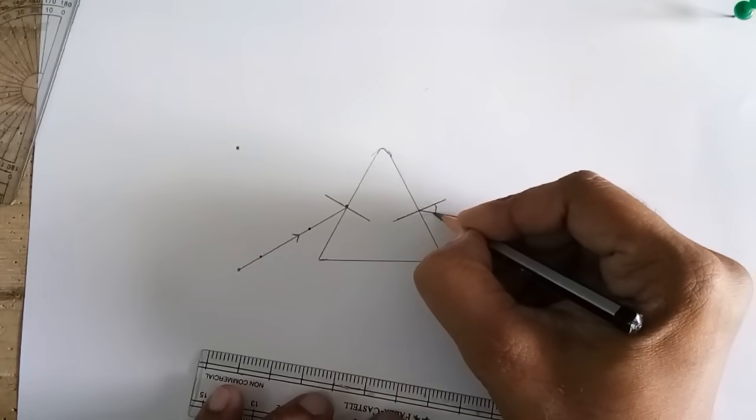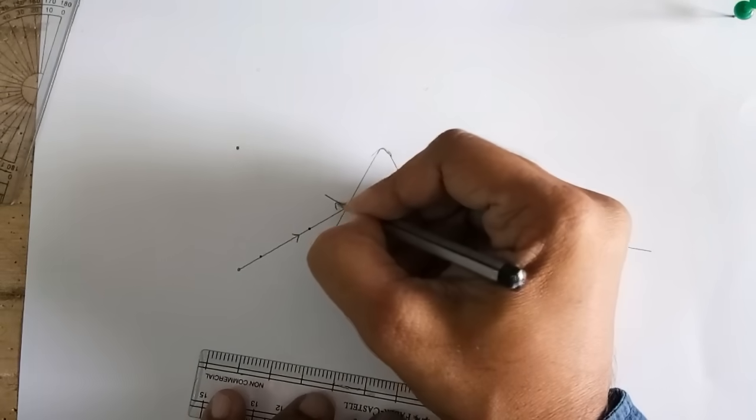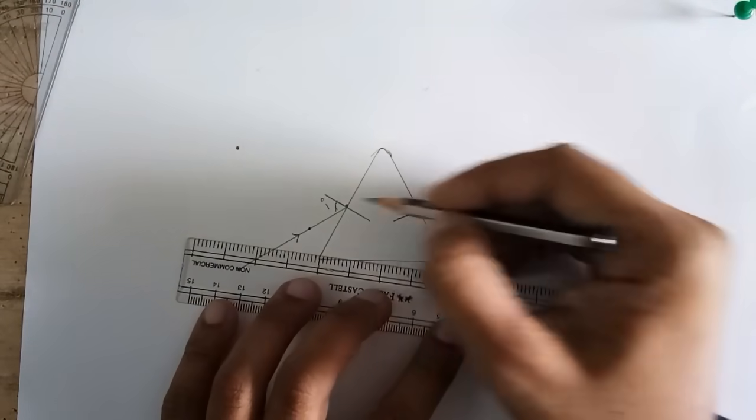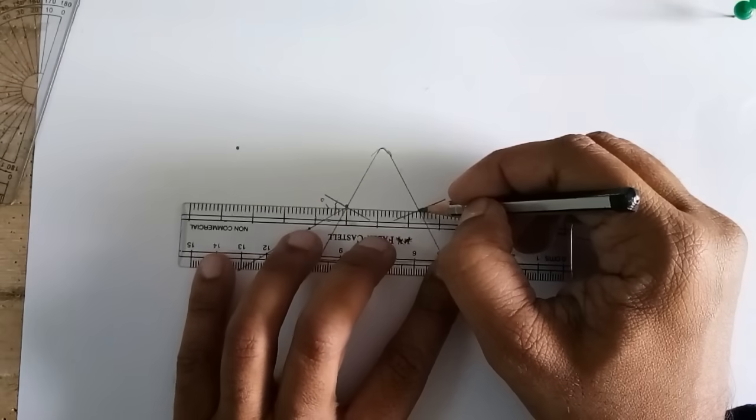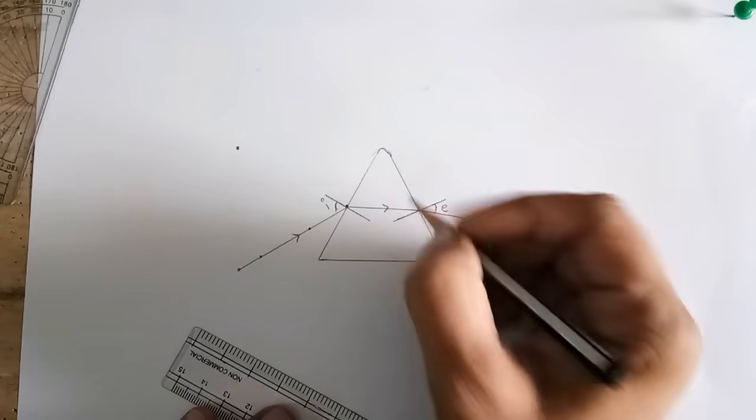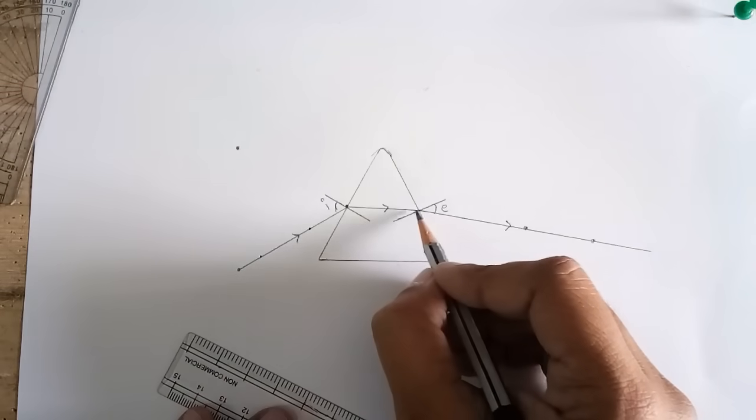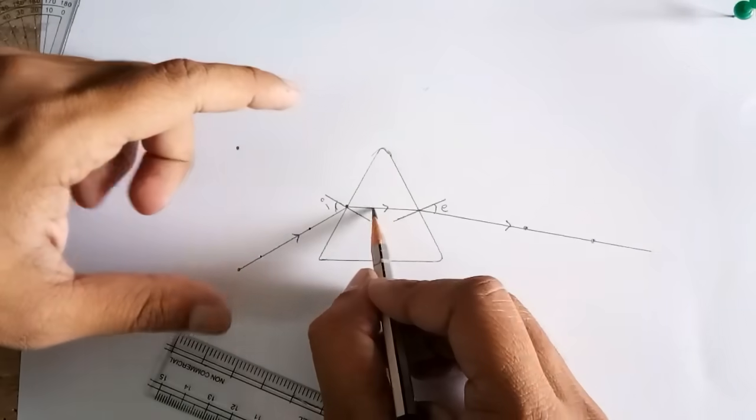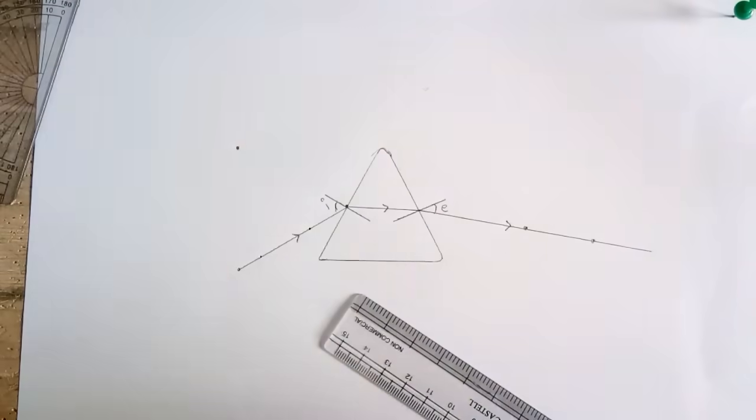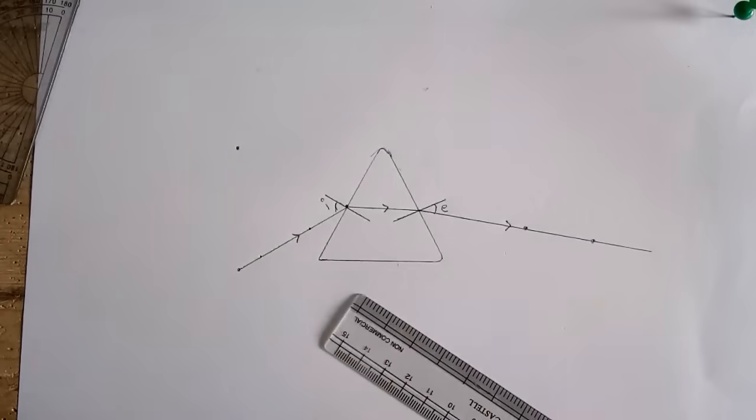Now I am going to join these two points and this would be my refracted ray. Incident ray, refracted ray, now you can see that instead of going straight it is bending towards normal due to the refraction. Now our main task is to find the angle of deviation.